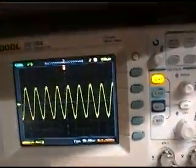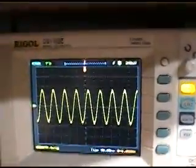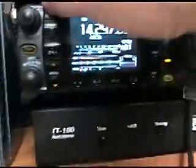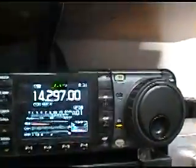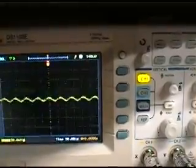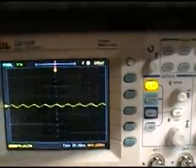If I switch over to USB mode, you'll see the carrier goes away and you'll see just the modulated signals. We'll do that here. Okay, now we're on USB. And now when I transmit, we'll see just the modulation there. There's a little bit of sine wave.